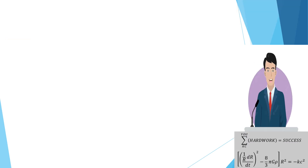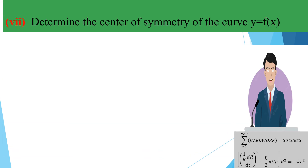Next, determine the center of symmetry. For an odd function, the center of symmetry is the origin. More generally, for y = 1/x, the two asymptotes x = 0 and y = 0 intersect at (0, 0), which is the center of symmetry. We extend this: the intersection point of the asymptotes gives the center of symmetry. This principle extends from GCE 2018 problems.